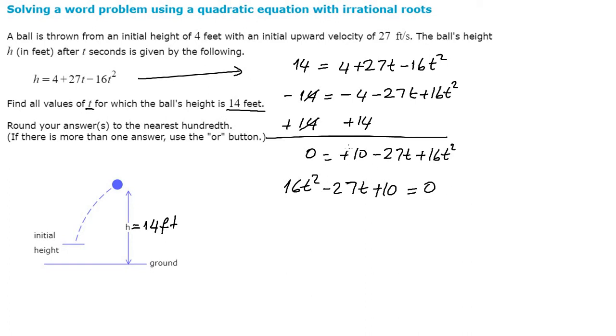So in order to solve for t, we first rewrite the equation in the form of at squared plus bt plus c, which we have already performed here.